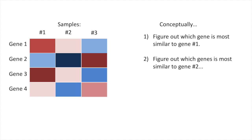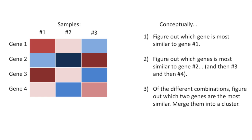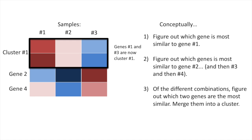The second step is to figure out what gene is most similar to gene number two. We do all the comparisons, and we see that gene number two is most similar to gene number four. And then we do the same thing for gene number three and then gene number four. In step number three, we look at the different combinations and figure out which two genes are the most similar. Once we've done that, we merge them into a cluster. In this case, genes number one and three are more similar than any other combination, so genes one and three are now cluster number one.